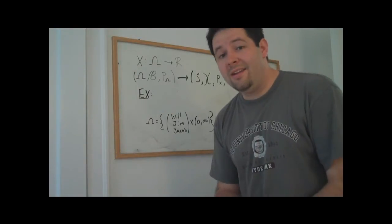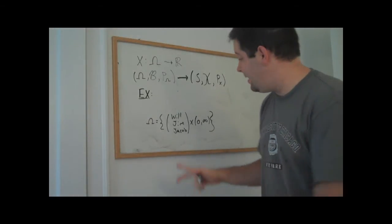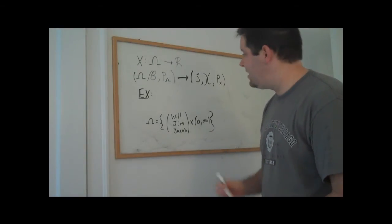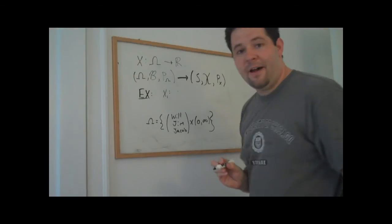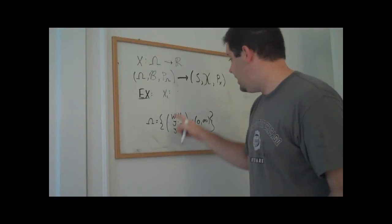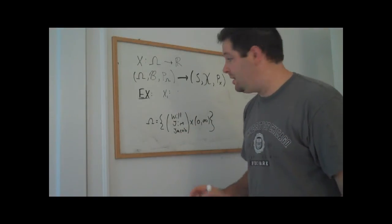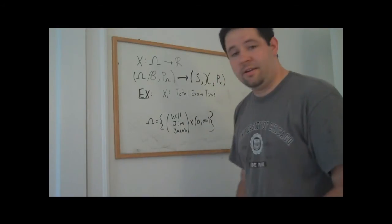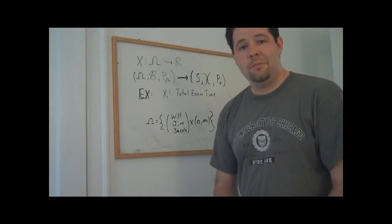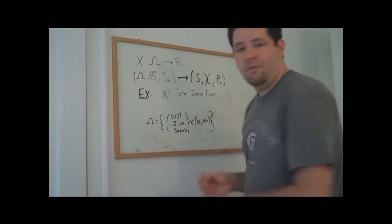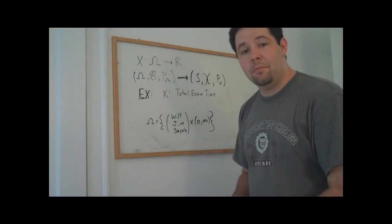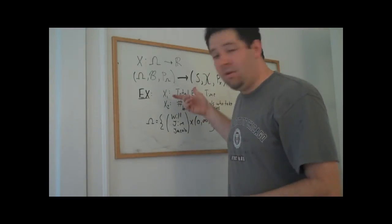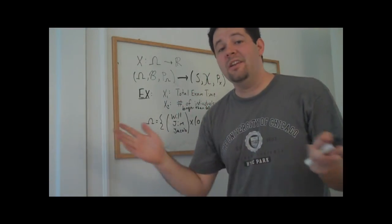Now there are a variety of different random variables that we can define based on this original sample space. For example, let's take x1, which we will define to be the total amount of time that the three individuals spend. So then what we'll do is we'll observe how long it takes Will, how long it takes Jim, how long it takes Jacob, add the three together, and that will be x1. And that's just going to be a number between zero and infinity. So x1 was total amount of time, and it was on a continuous interval.